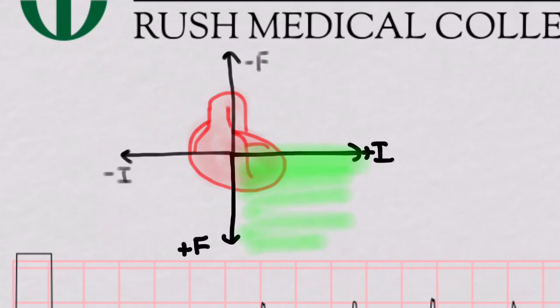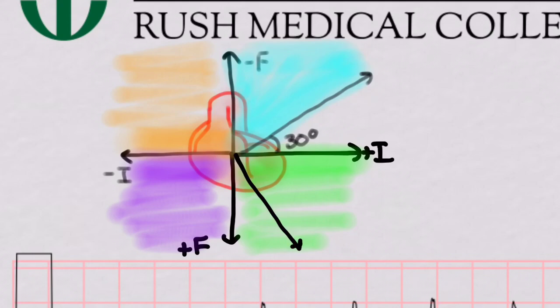We've got a normal axis if it's in this quadrant, which is positive 1 and positive F. Right axis would be this one here, which is positive F and negative 1. Negative 1 and negative F mean this is this extreme axis. Some will say extreme right if it's over here, extreme left if it's over here. And finally we've got left axis if it's in this area here, if you have positive 1 and negative F. And that's up to a line of about 30 degrees.